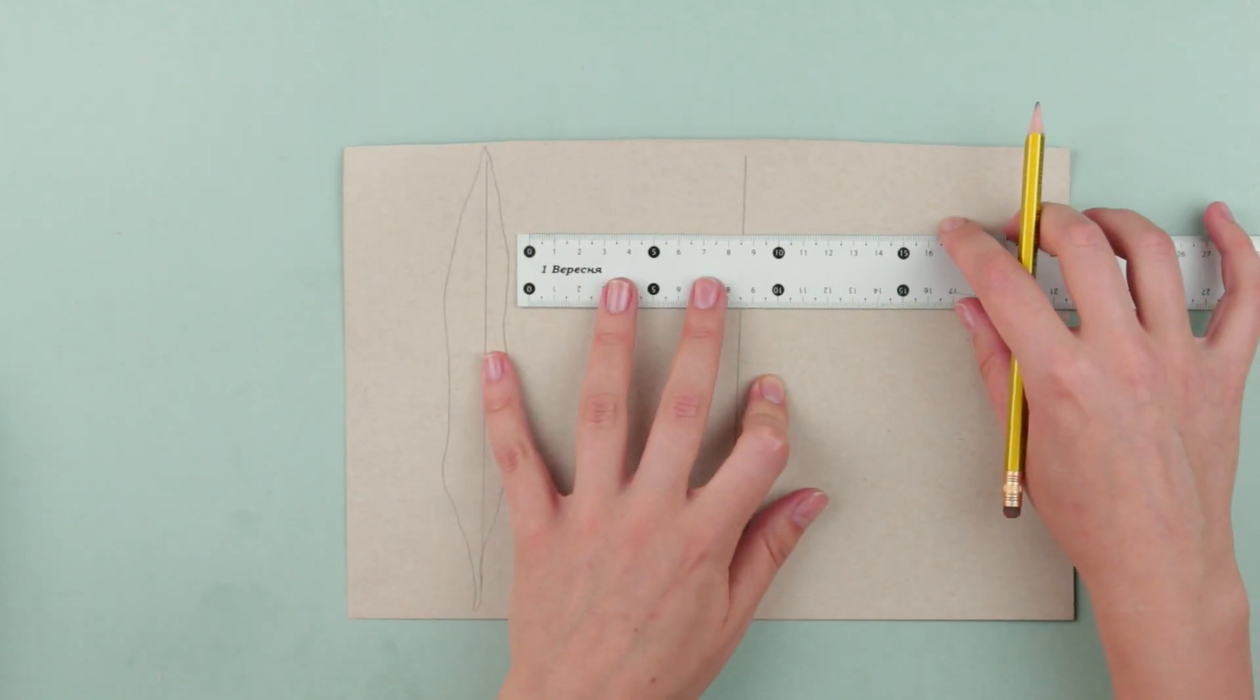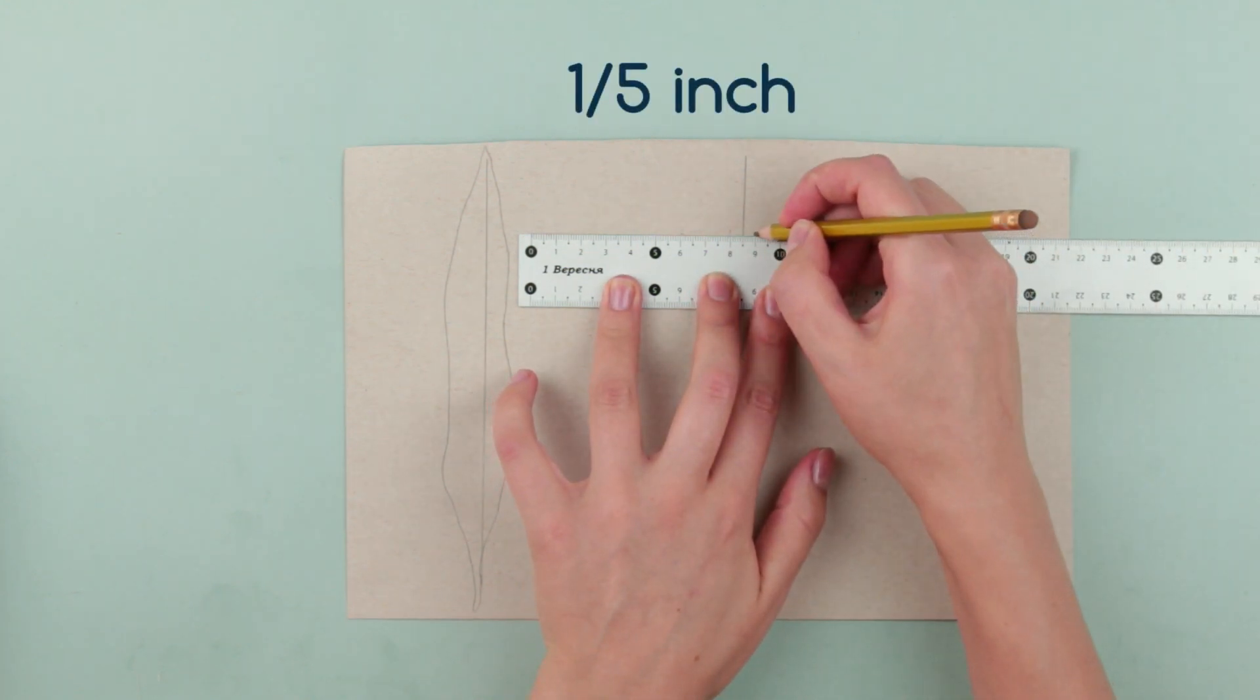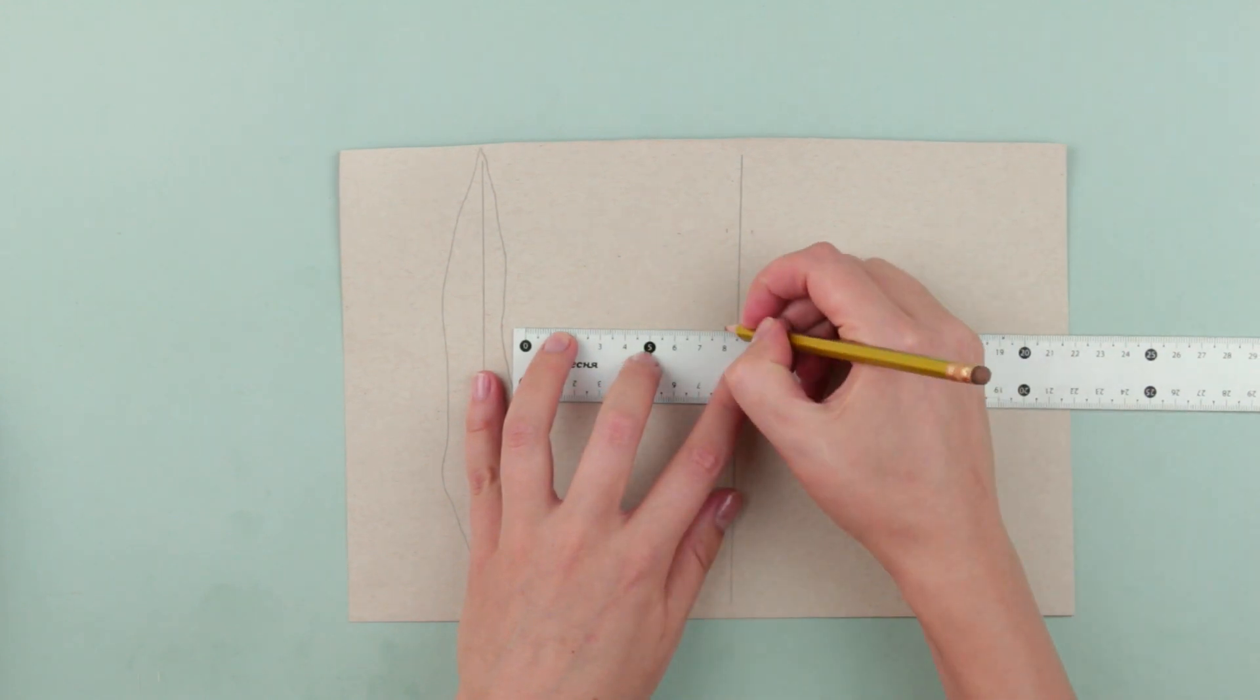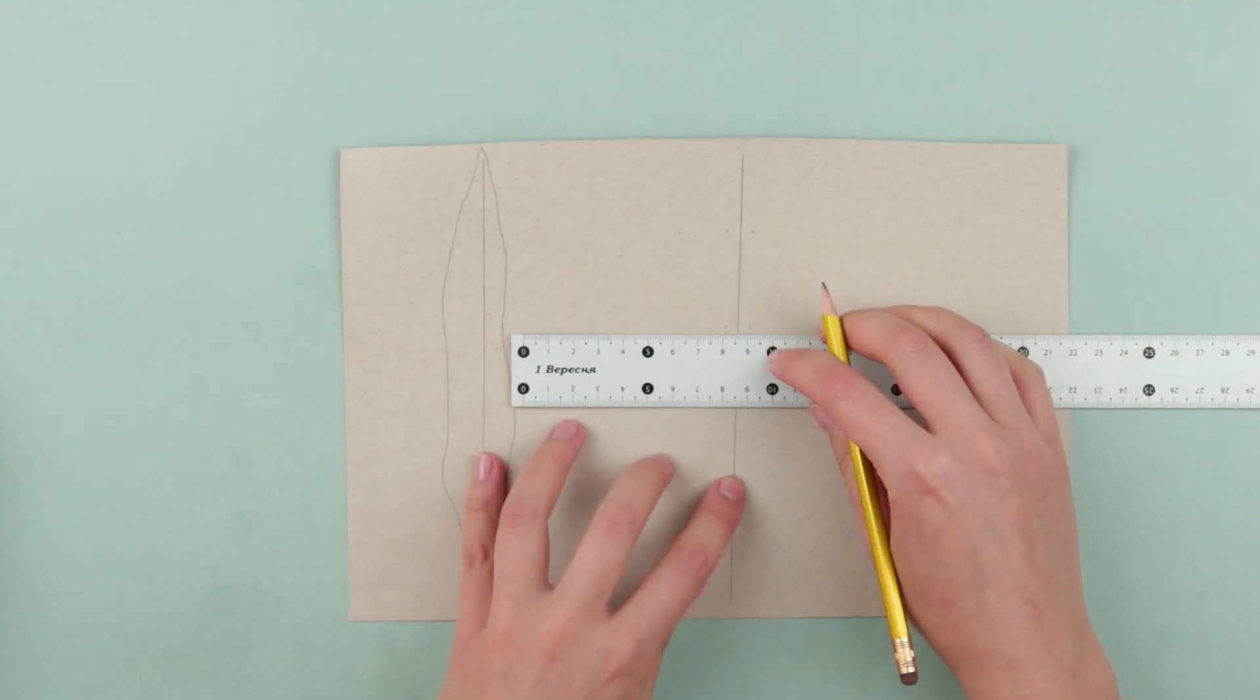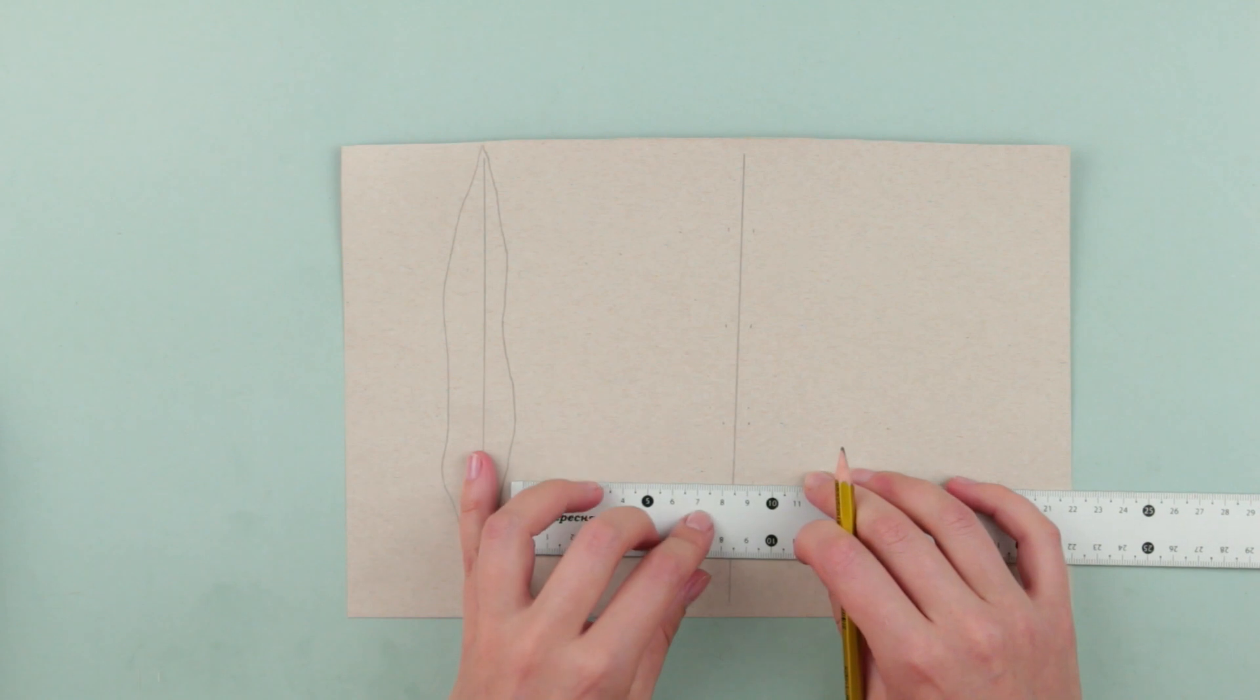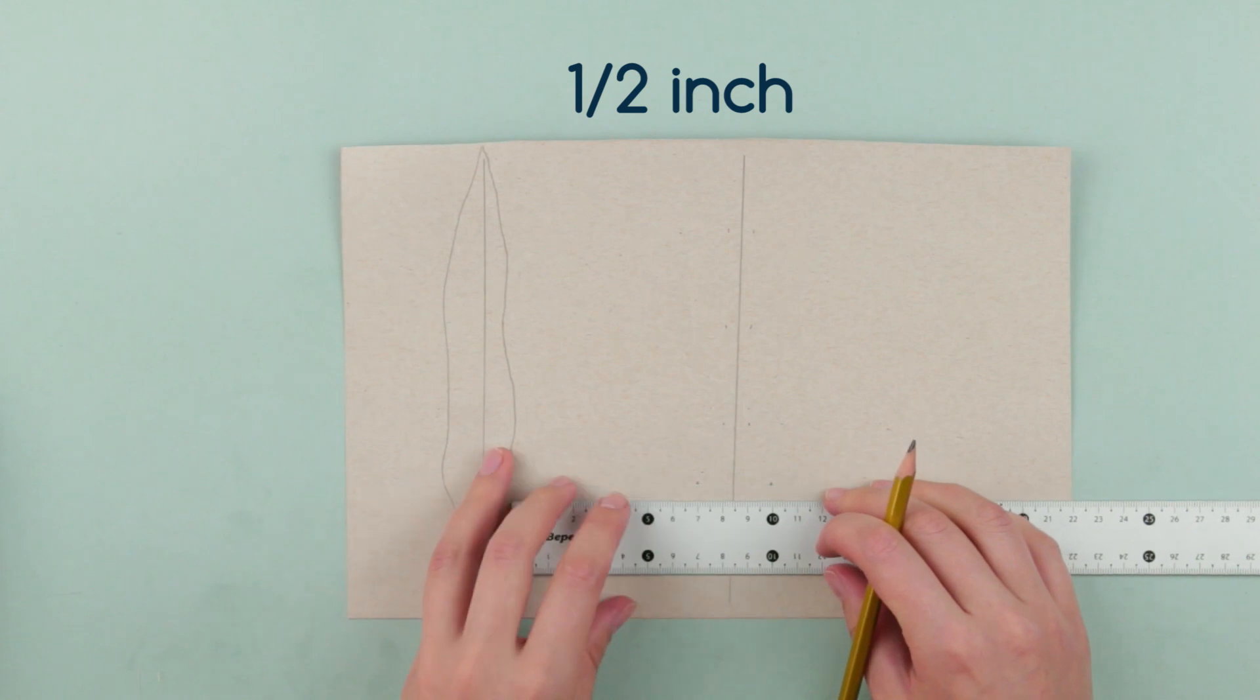Make another holder arrow shaped. Mark one-fifth inches off the center to the left and right to make the shaft. Measure out half an inch from the center to draw the fletching.